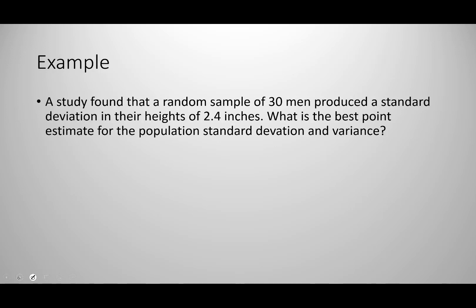Here's an example: a study found that a random sample of 30 men produced a standard deviation of their heights of 2.4 inches. What is the best point estimate for the population standard deviation and the variance? For the population standard deviation, our best estimate equals our sample value, so since s equals 2.4 inches, our best estimate for the population standard deviation is also 2.4 inches. For the variance, we use s-squared, so we take 2.4 and square it, giving a best estimate for the variance of 5.76 inches squared.